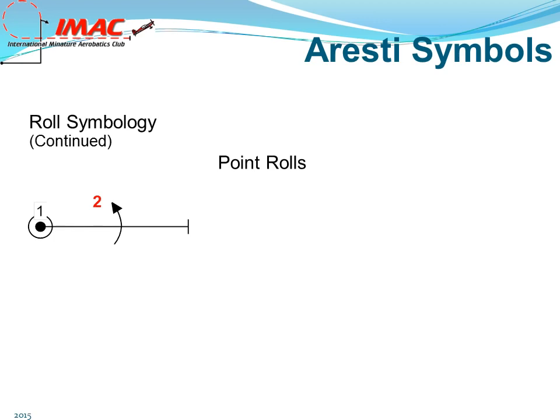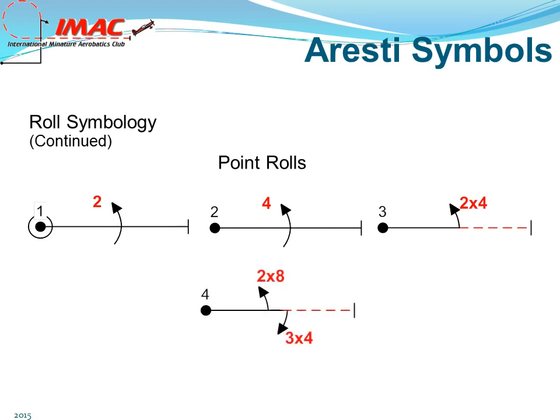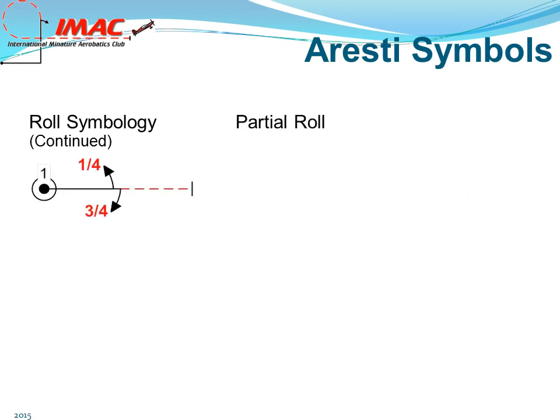Point rolls. Figure one is a two-point roll. Figure two is a four-point roll. Figure three is two of four — two points of a four-point roll — notated by the 2x4. Figure four is a two-of-eight followed by an opposite three of a four-point roll. Notice that the direction of flight would go from positive or upright to negative.